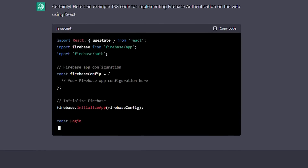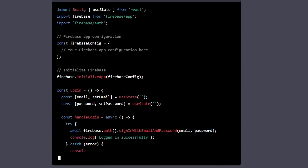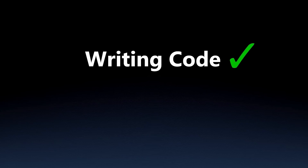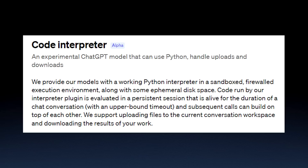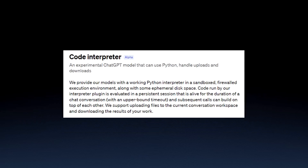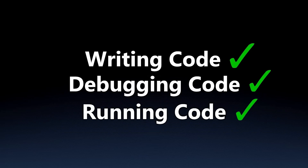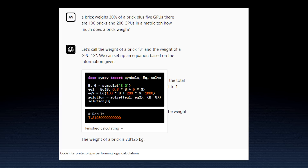For code, ChatGPT was already great at writing and debugging code. With OpenAI's new Code Interpreter plugin, ChatGPT can actually do one extra step: actually running that code. Right now the plugin is limited to Python, which honestly, for many use cases, is more than good enough.